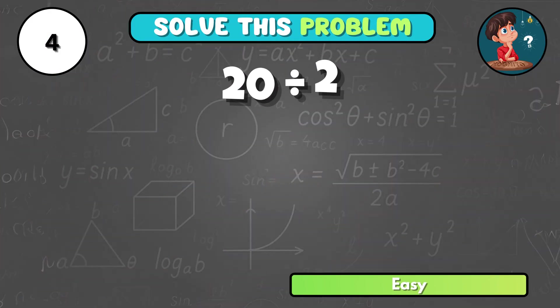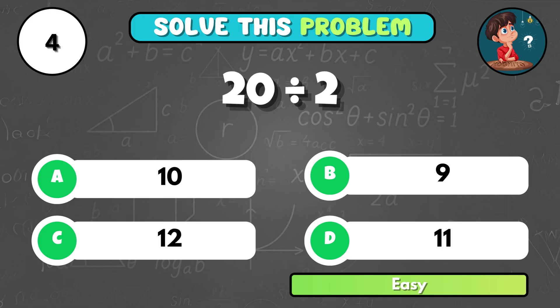How many times does 2 go into 20? It's A, 10.